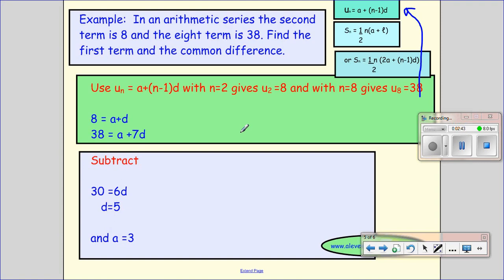And whenever you have these two separate scenarios or situations, then normally you do have to write two equations and then solve them simultaneously. So when N equals 2, the second term is 8, so I get 8, then I have A plus N minus 1, so it's 2 minus 1, times D, so that'll just give me A plus D.